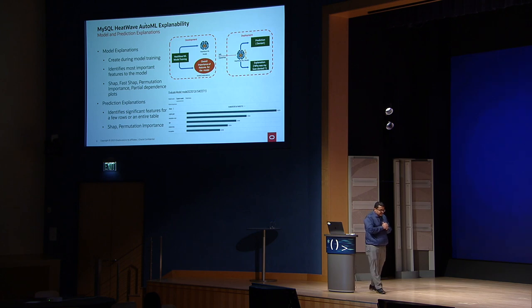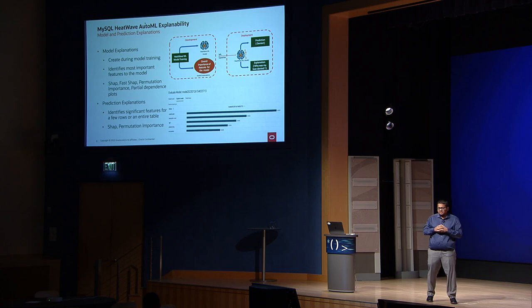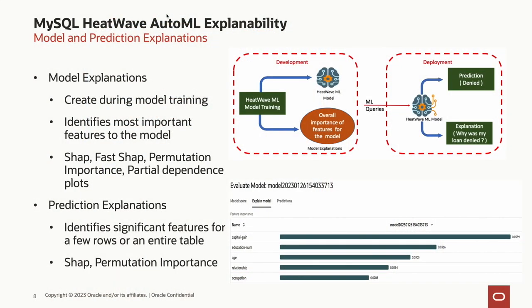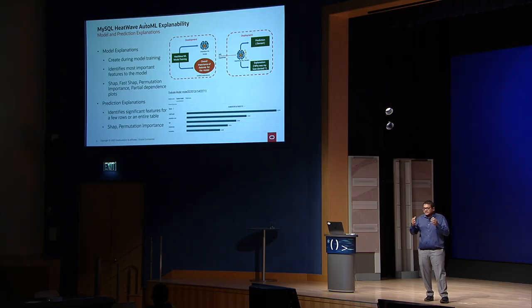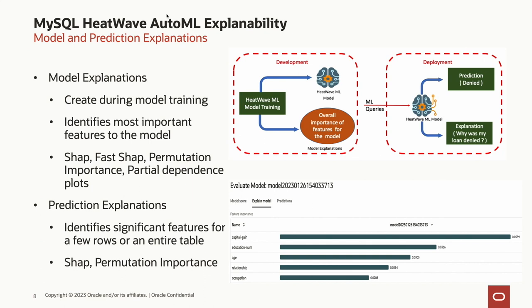We have built-in support for explainability. There are two categories of explanations: model explanations and prediction explanations. Model explanations reflect what the model learns as a whole — for example, the bank marketing model figured out that duration of the call was the most important feature overall. Prediction explanations let you drill down into each individual prediction — for that particular customer, the duration was high, but the month was not correct. No other service has this capability, making it very powerful.